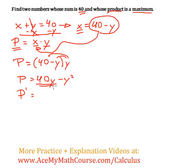So the derivative of 40y with respect to y is just 40. The derivative of negative y squared, I bring down the exponent, I get negative 2y.